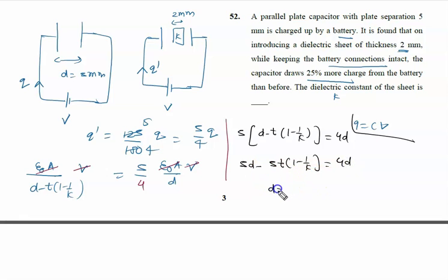5D minus 4D is D. D equal to 5T times (1 minus 1 by K). What is the value of D? That is 5 millimeter. What is the value of T? That is 2 millimeter. We are not converting into meters because both sides are cut. 1 minus 1 by K. 5 and 5 cancel. It is 1 by 2 equal to 1 minus 1 by K.